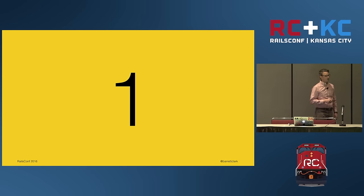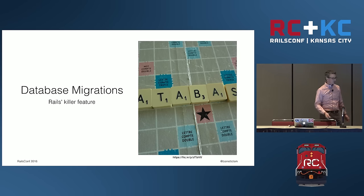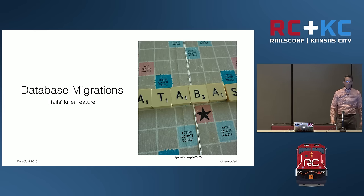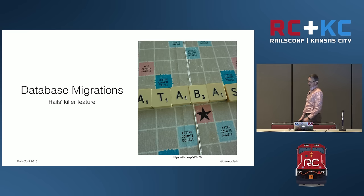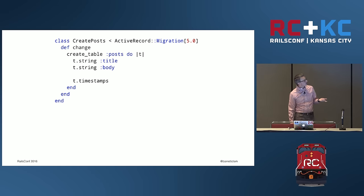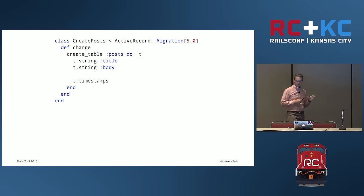Rake can help us manage our databases. If you've done any Rails, you've probably used database migrations and you've used Rake. This is probably the biggest killer feature in Rails — database migrations. Here we have a migration from the Rails 5 beta. We're going to make a blog. We've got our timestamps, created_at and updated_at, and two fields: a title and a body.